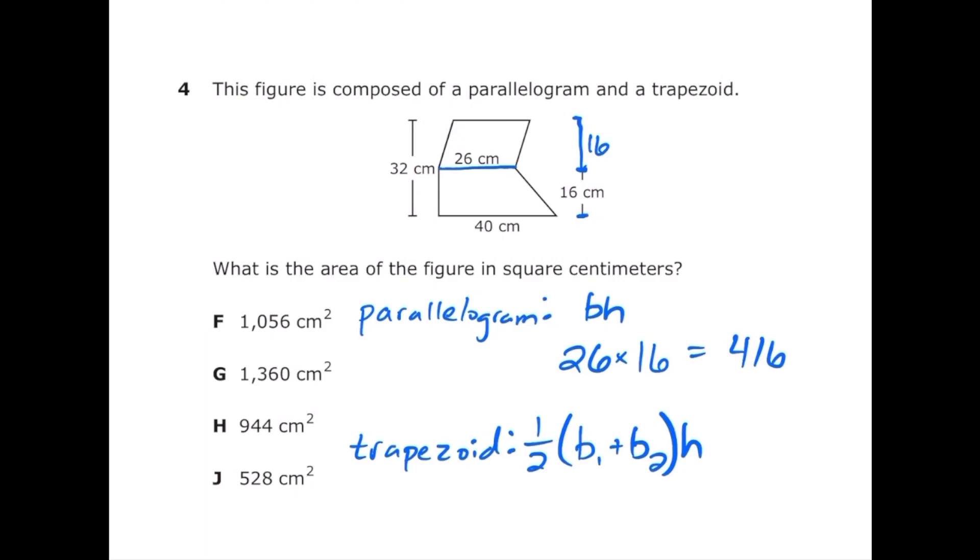Now I can move to the trapezoid. I'm going to write one half times, one of my bases is 26 and my other base is 40, so 26 plus 40 times the height which is 16. Once I multiply that out I get 528. Now we add our two areas: 528 plus 416 equals 944. The correct answer is letter H.